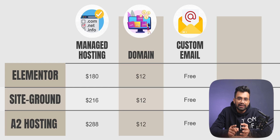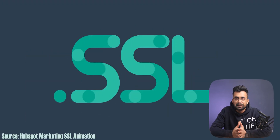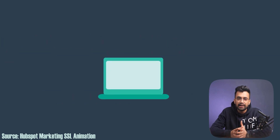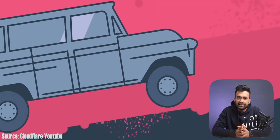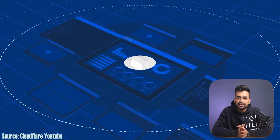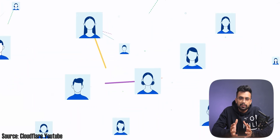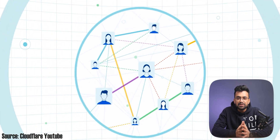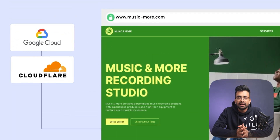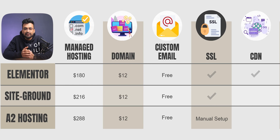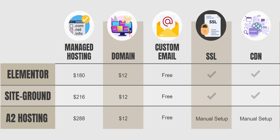After getting hosting, domain, and custom email, we need SSL certificates. SSL makes our website secure, verifies ownership, prevents attackers from creating a fake version, and gains users' trust. Along with SSL, we need a CDN to improve performance — when a visitor comes to the site, it automatically routes them to the nearest server, reducing loading time. With Elementor we get Cloudflare CDN, used by most major sites. SiteGround also provides a CDN, while A2 Hosting doesn't include one — though you can set up Cloudflare manually with both, which I'd rate 2 out of 5 stars for skill requirement.